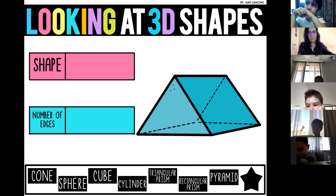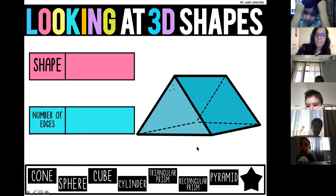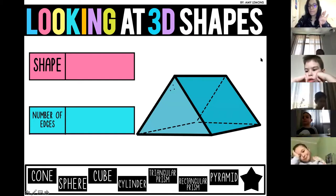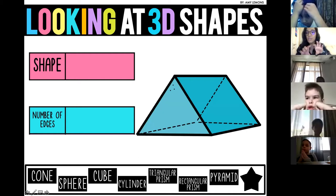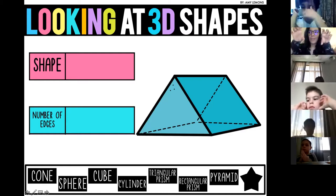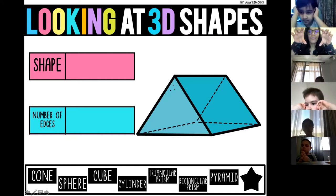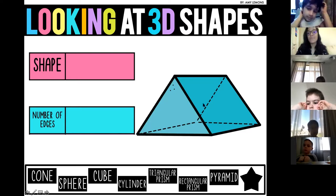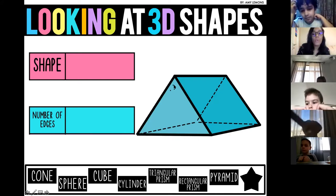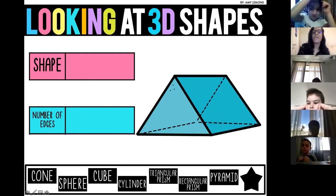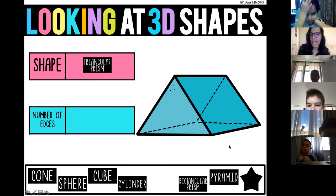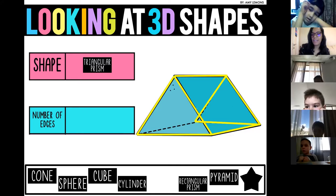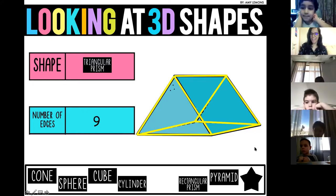Amin, what is the name of this one? It goes long, so if they go long it's not a pyramid — it's a prism. What shape do we have at the beginning? A triangle. So it's a triangular prism. How many edges does it have? Let's count: one, two, three, four, five, six, seven, eight, nine. Well done!